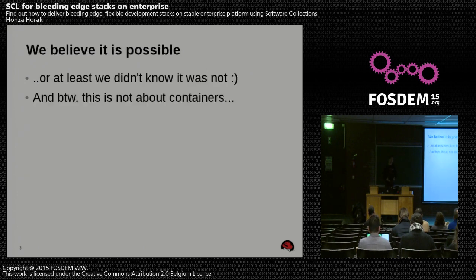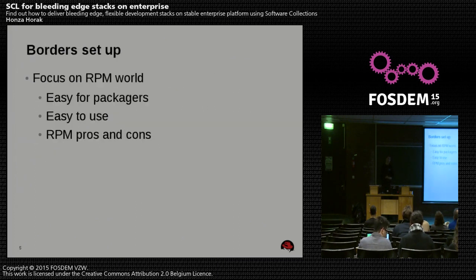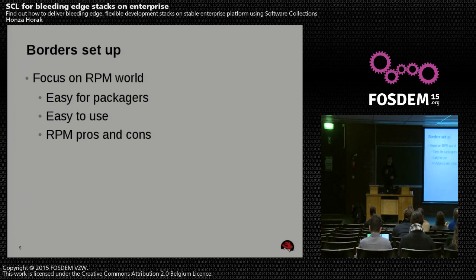I will tell you that it is possible to install a new version of an application even on Enterprise Linux, like CentOS 5, 6, RHEL 5, 6, or even 7. From the beginning, there are some borders with this concept — it was said this solution is only focused on RPM packages. The good news is that it was designed to be very simple to use and very simple to package using this concept. But if you don't like RPM, you will probably see the same disadvantages of software collections as well, because it's based on RPM.